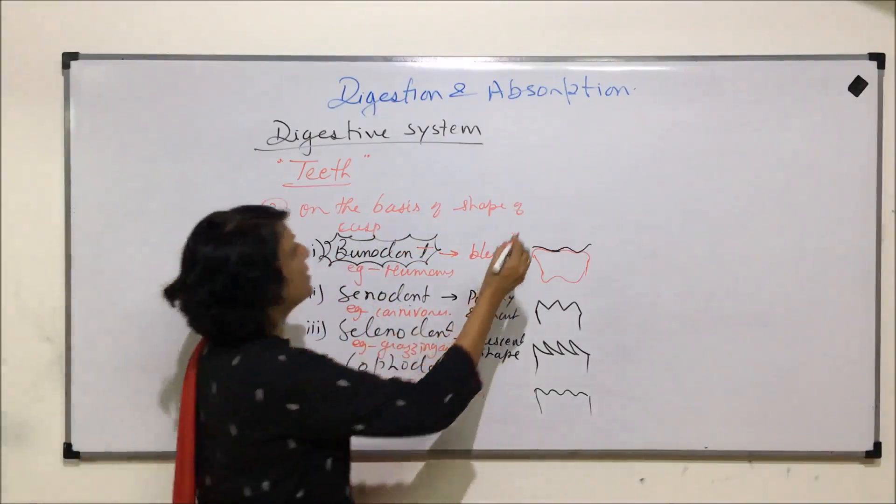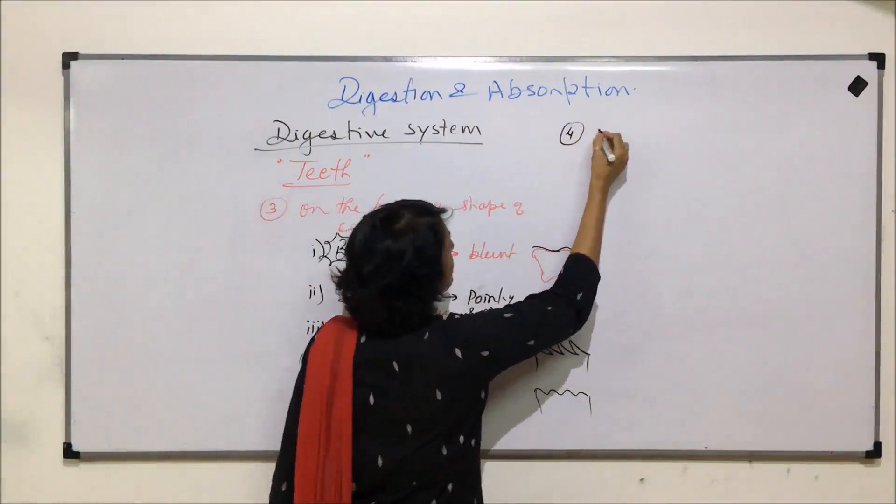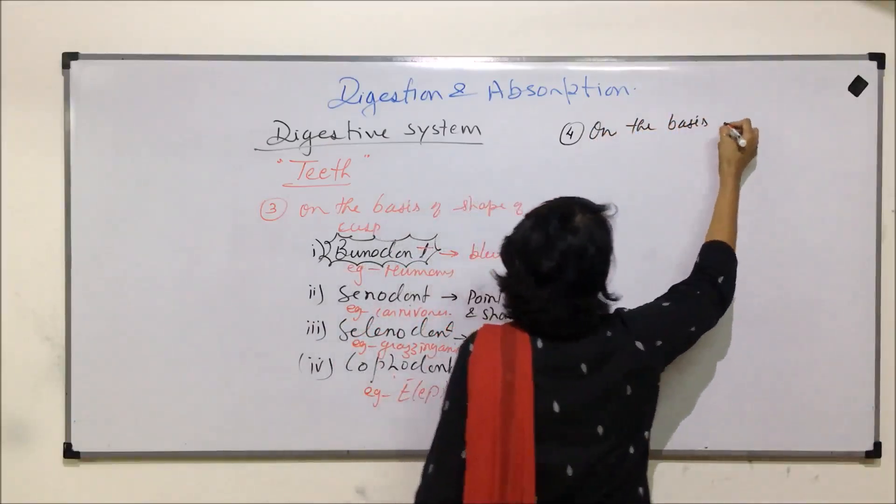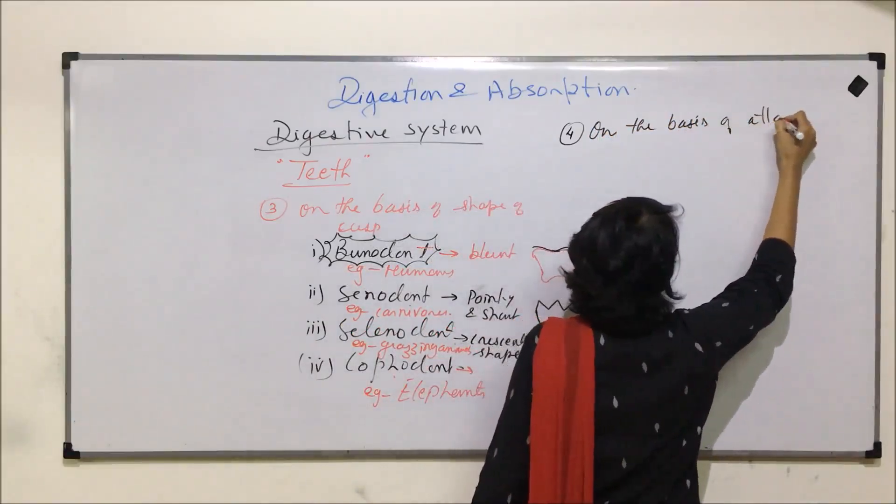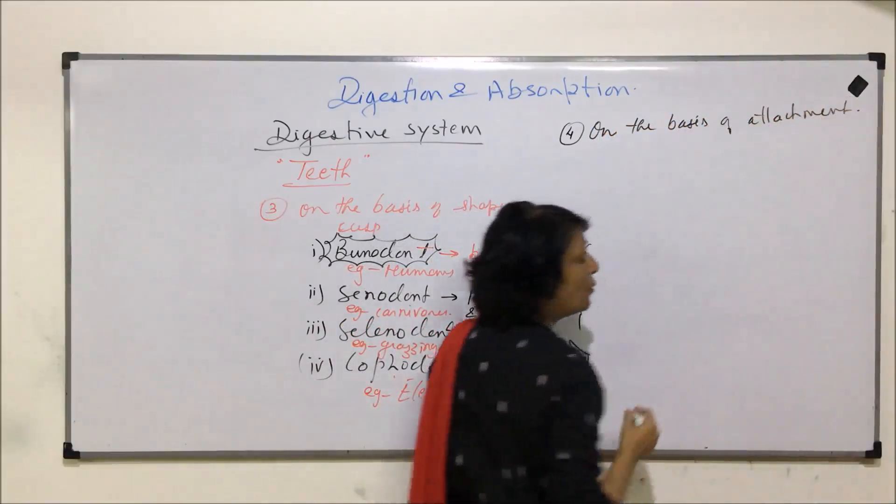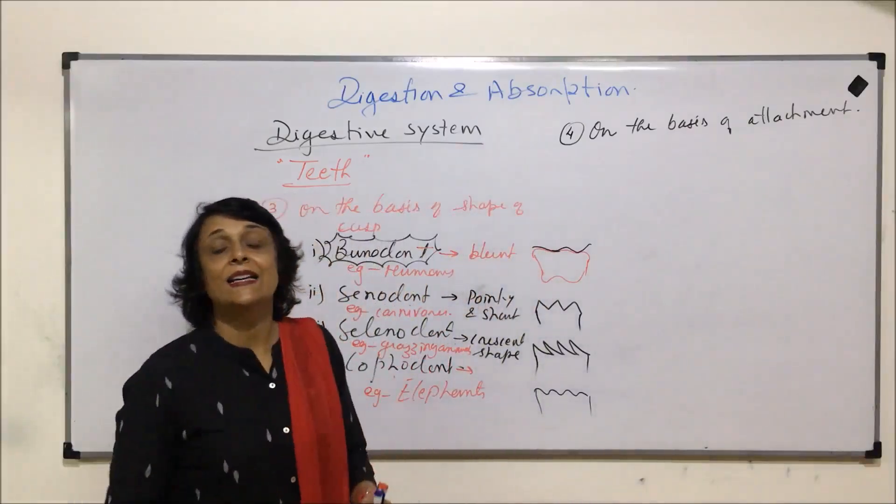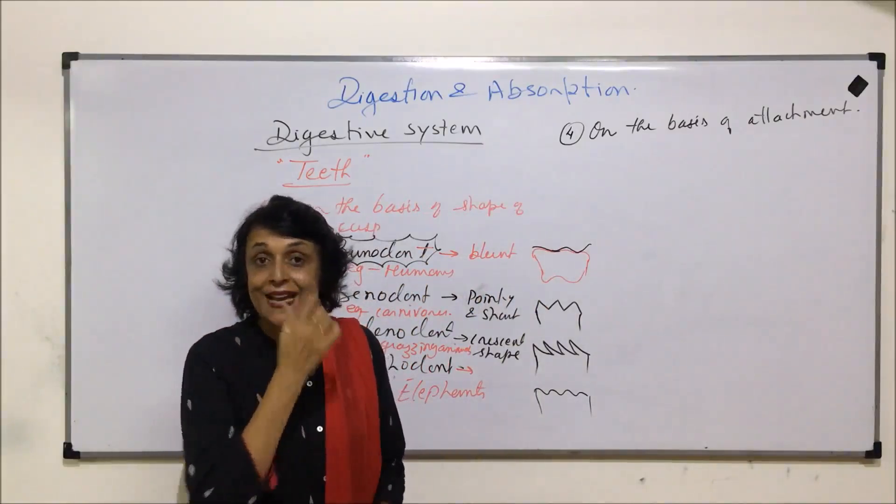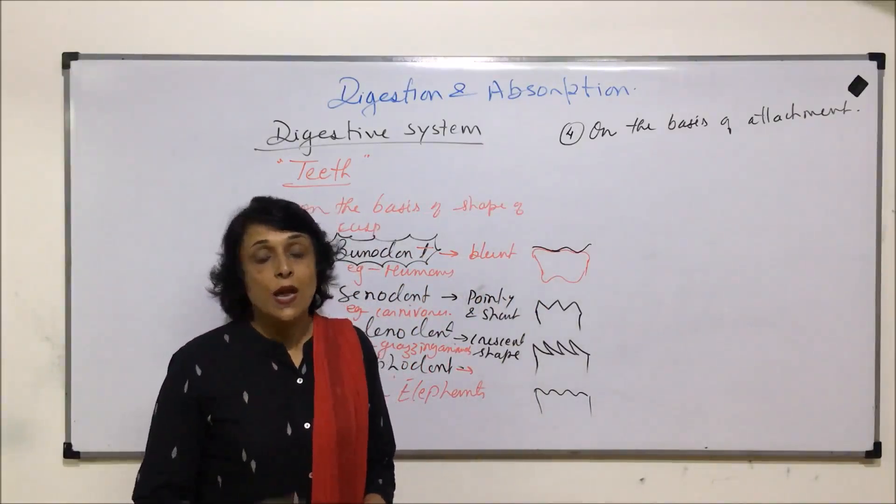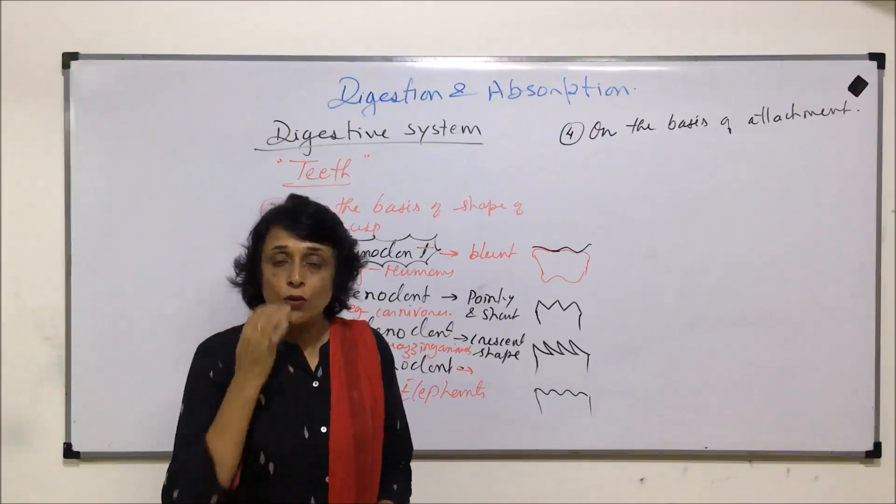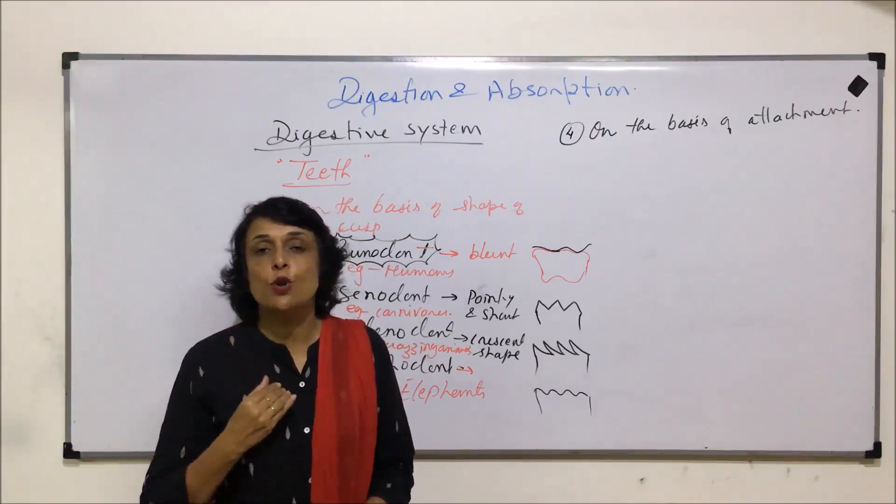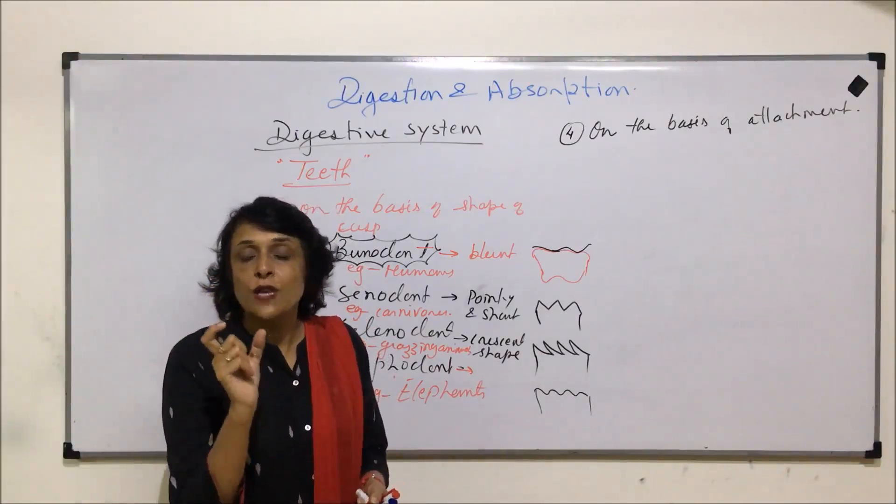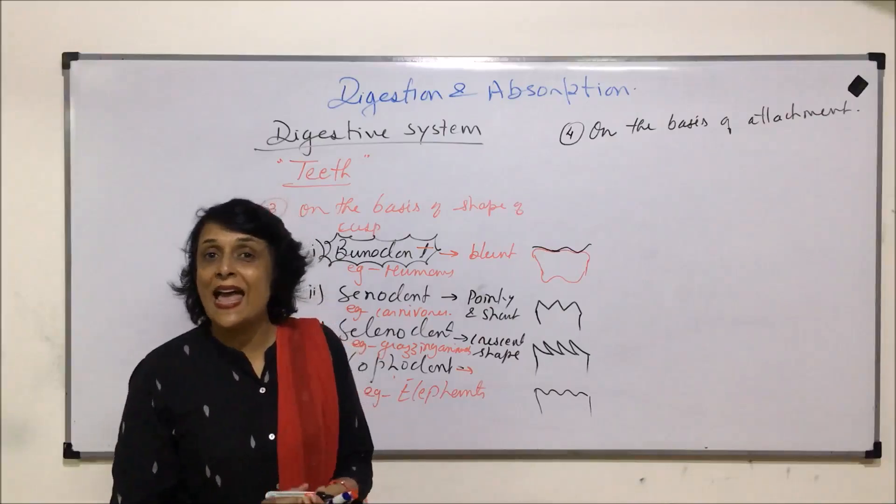The fourth classification is on the basis of attachment. That means how these teeth are attached to the bone. The bone to which these teeth are attached. If it is upper jaw, we will call it maxillary bone or maxilla. If it is the lower jaw, then we will call it mandible.